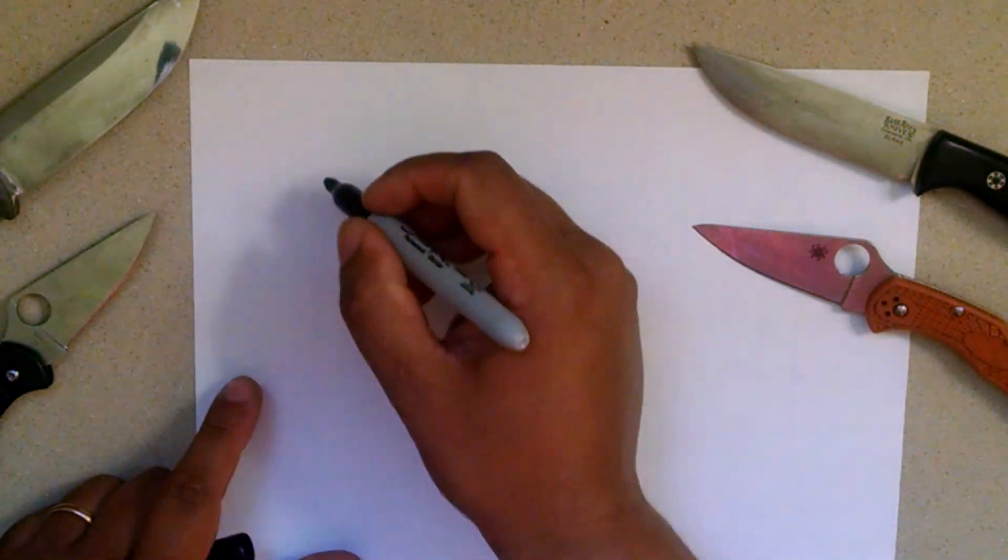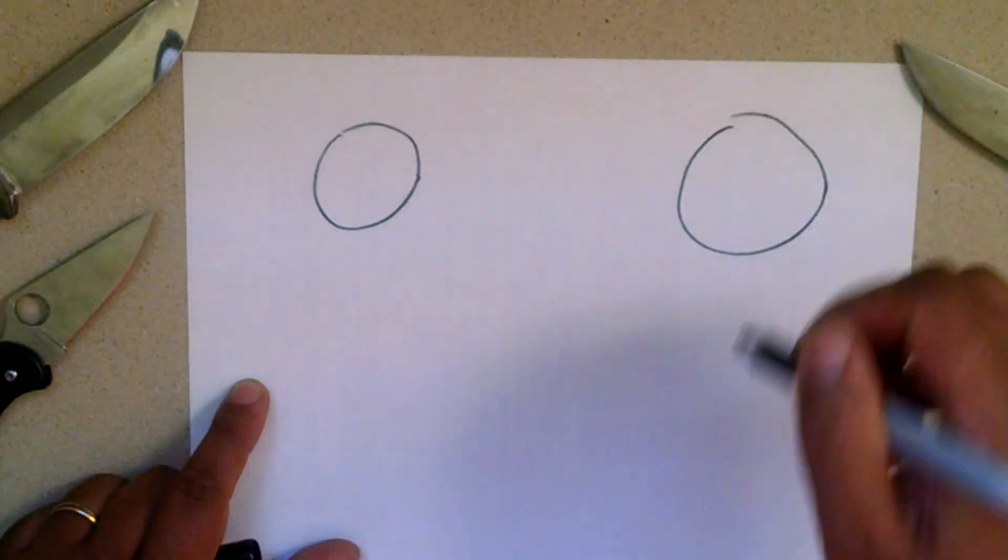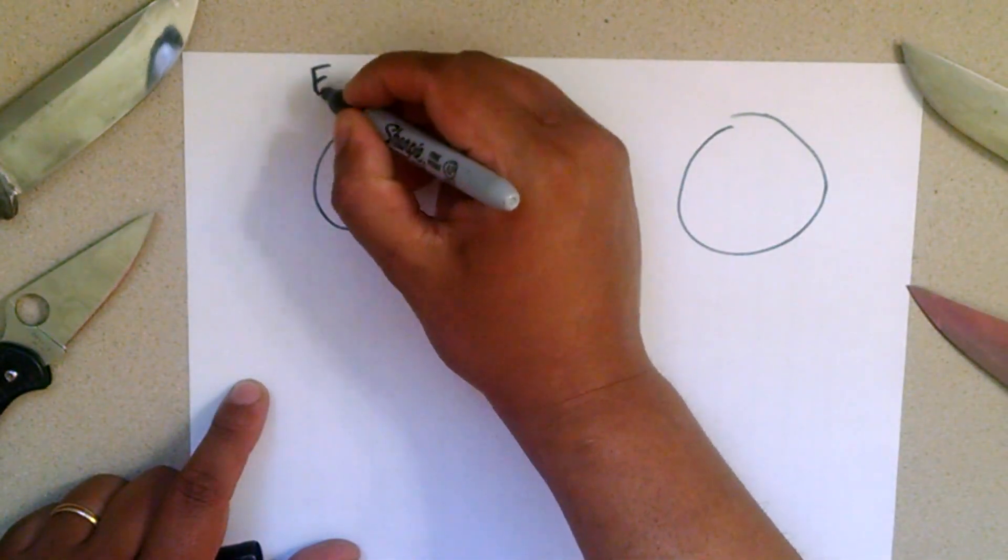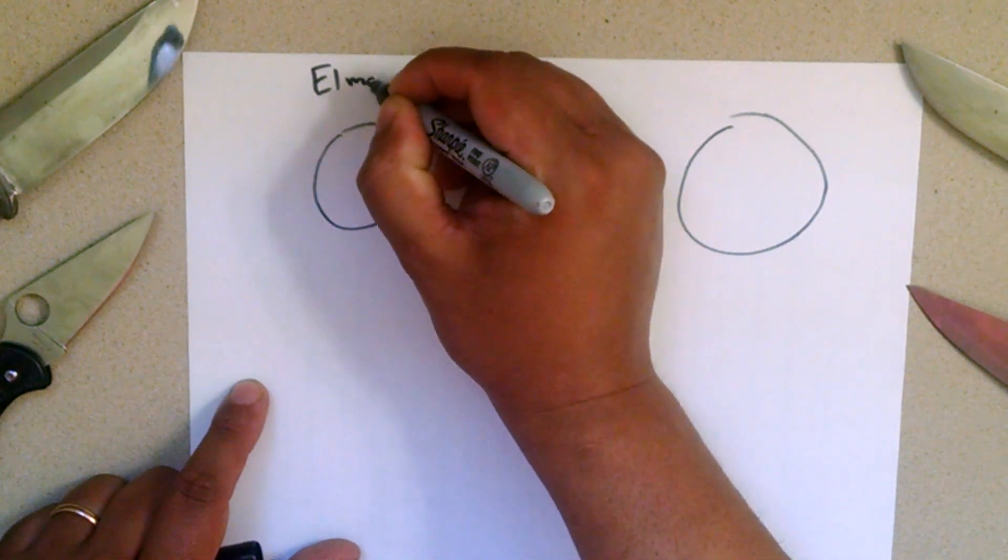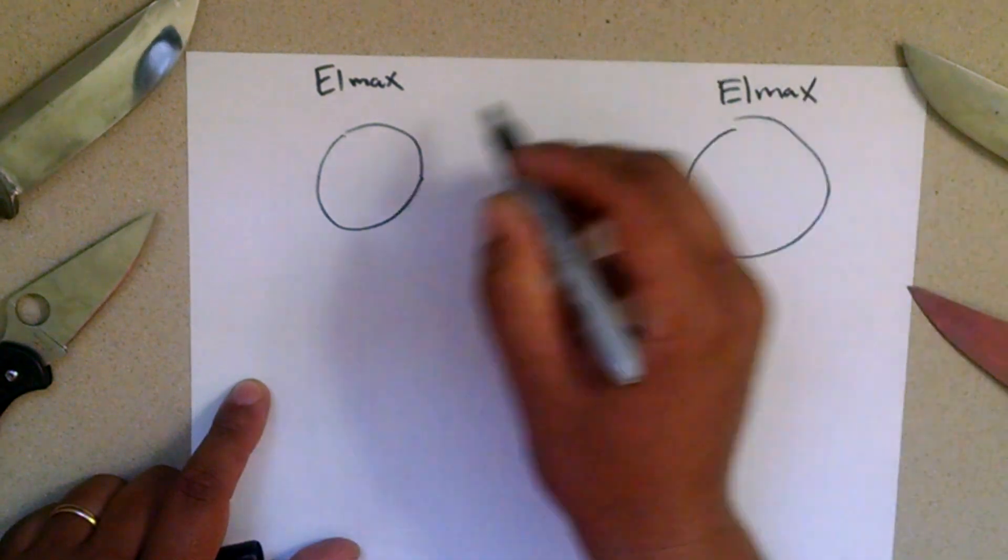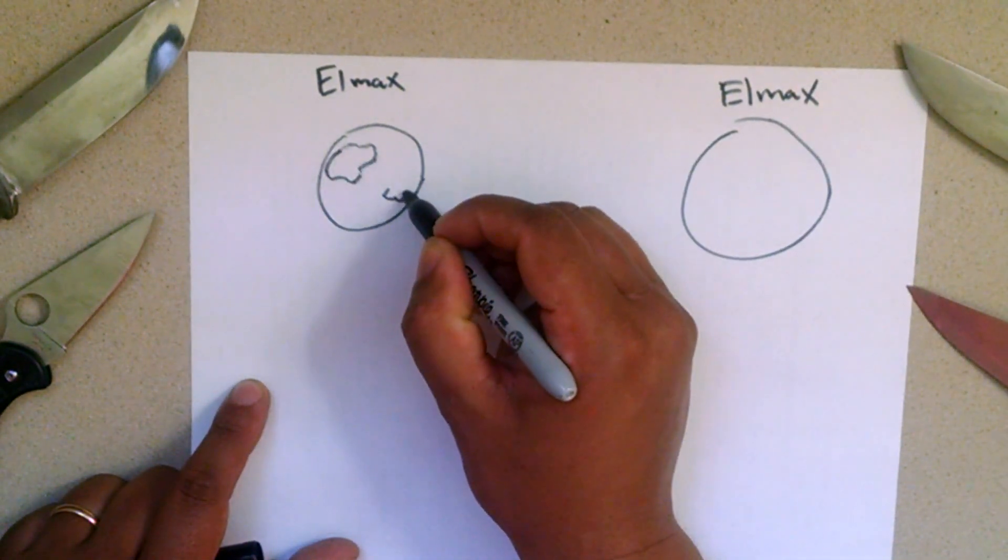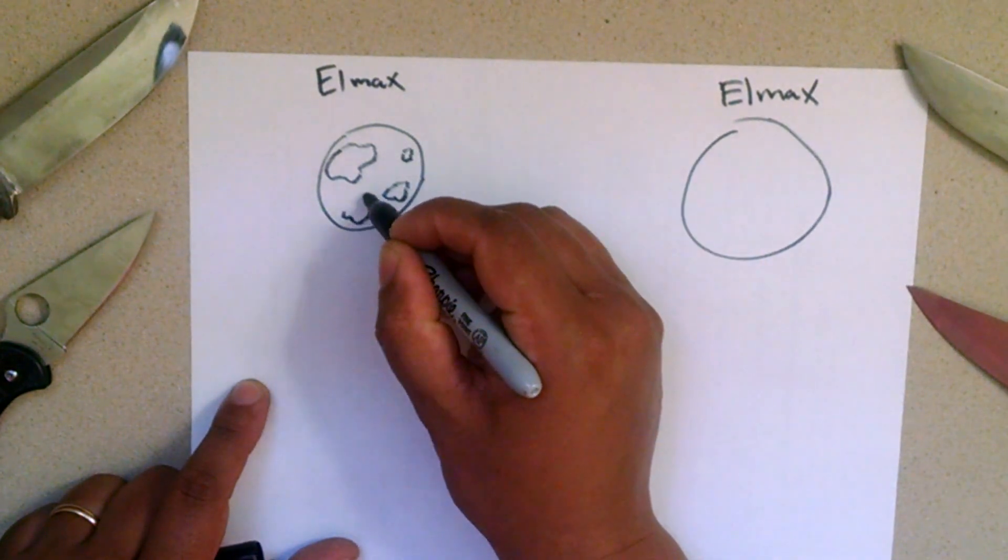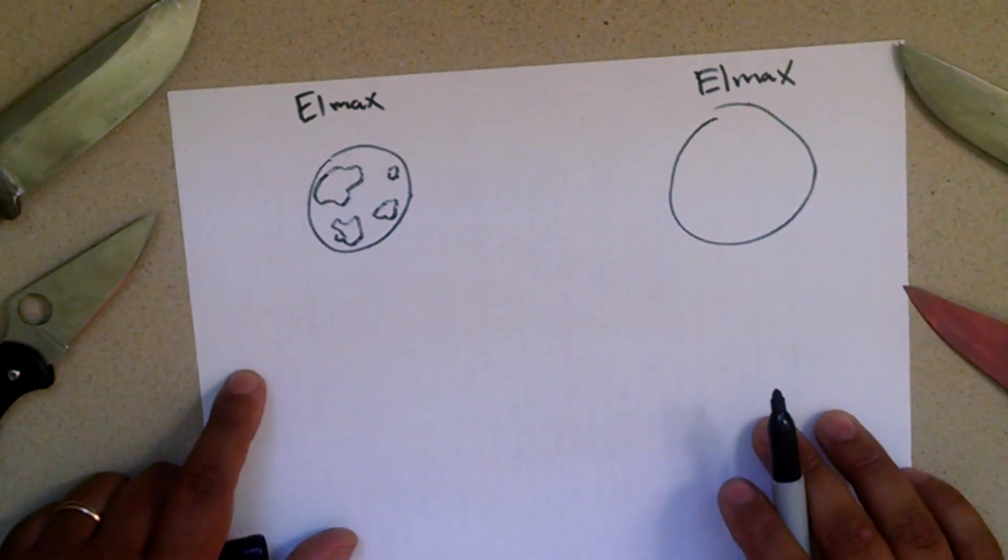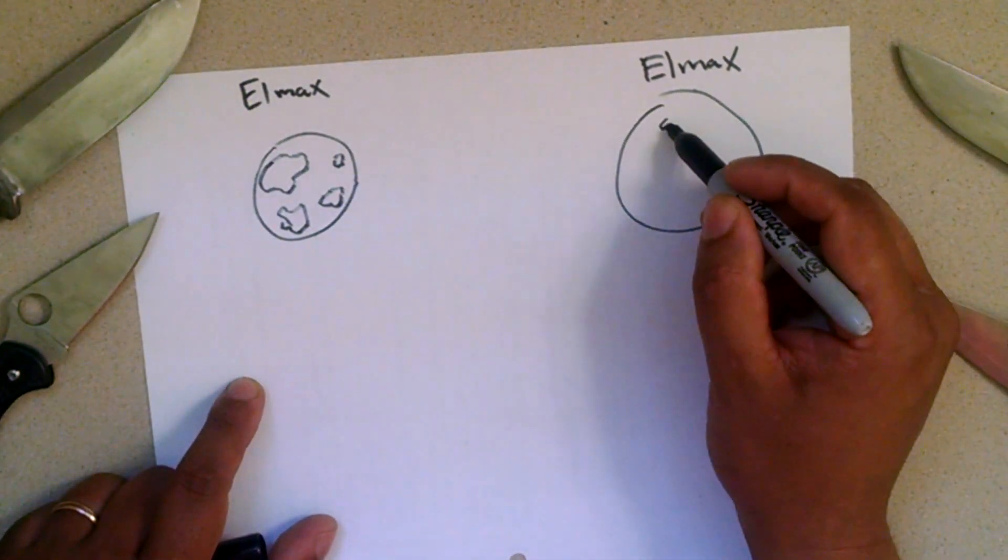So if we were to zoom in on each, if we had the same amount of alloy on ELMAX but one of them was powdered and one of them wasn't, you would just see these huge clumps. And they wouldn't be very even. It would almost be like inclusions. Occlusions, I can't remember if I'm using that correctly.